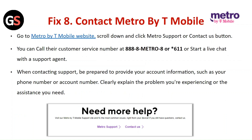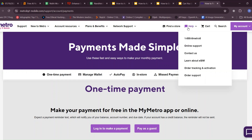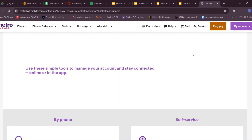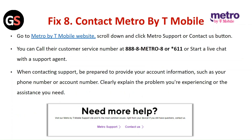Fix eight: contact Metro by T-Mobile. Go to the Metro by T-Mobile website, scroll down and click on the Metro Support or Contact Us button. You can call their customer service number or start a live chat with a support agent. When contacting support, be prepared to provide your account information such as your phone number or account number, and clearly explain the problem you are experiencing or the assistance you need.